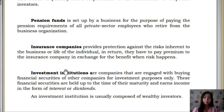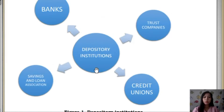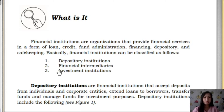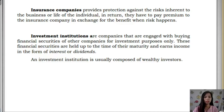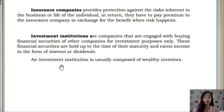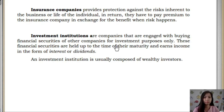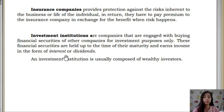The last category is Investment Institutions. Investment institutions are companies engaged in buying financial securities of other companies for investment purposes only. These financial securities are held until the time of maturity, and they earn income in the form of interest or dividends. This is composed of wealthy investors who invest their money for a specific time of maturity — say five or ten years — and after that period, they get their investment back plus the interest or dividends.